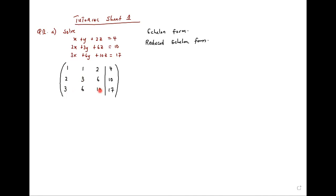For the reduced echelon form, y is equal to the number that will be here and z is equal to the number that will be here. We do that in a systematic way. So let's see how we do that — we first want to make it in echelon form.